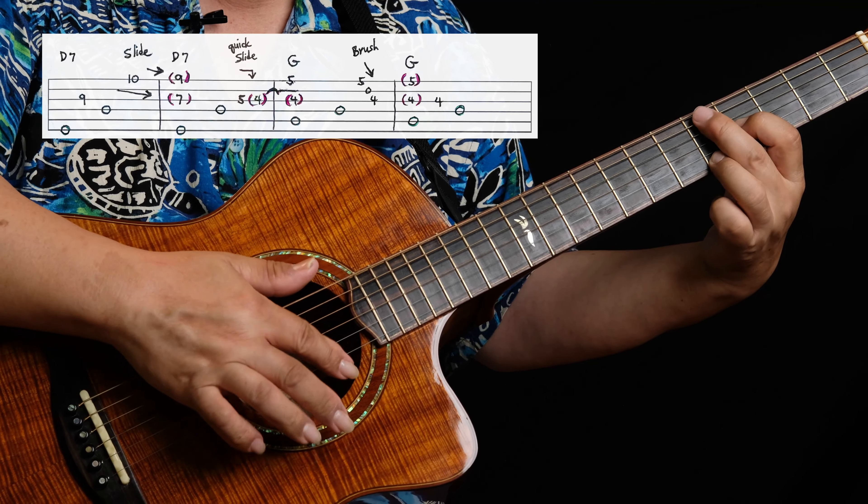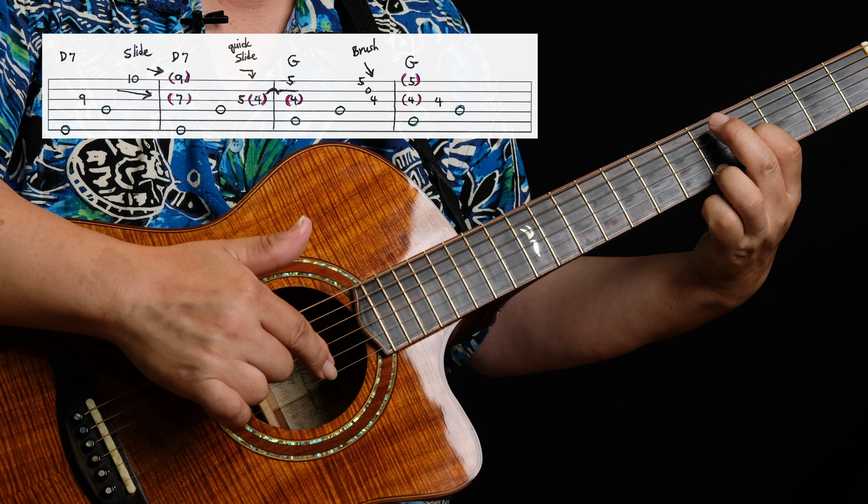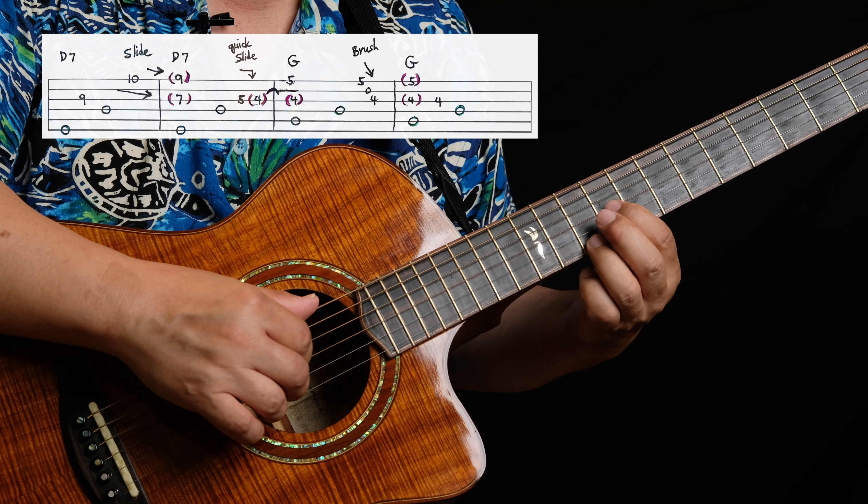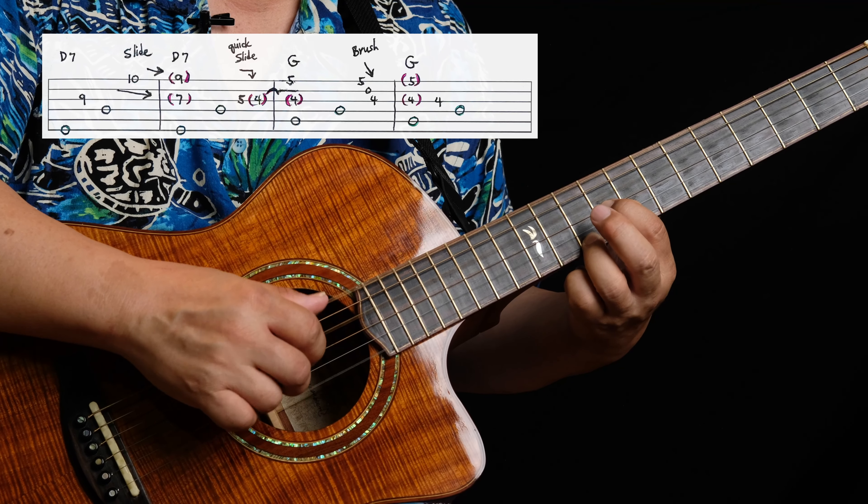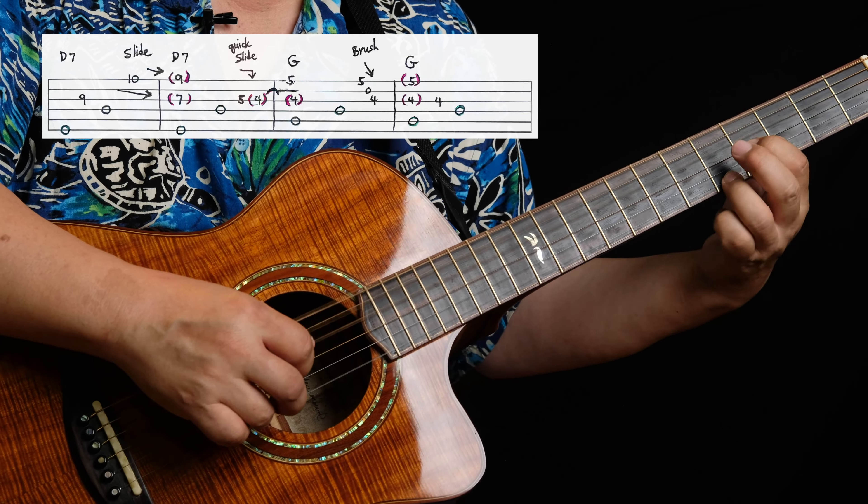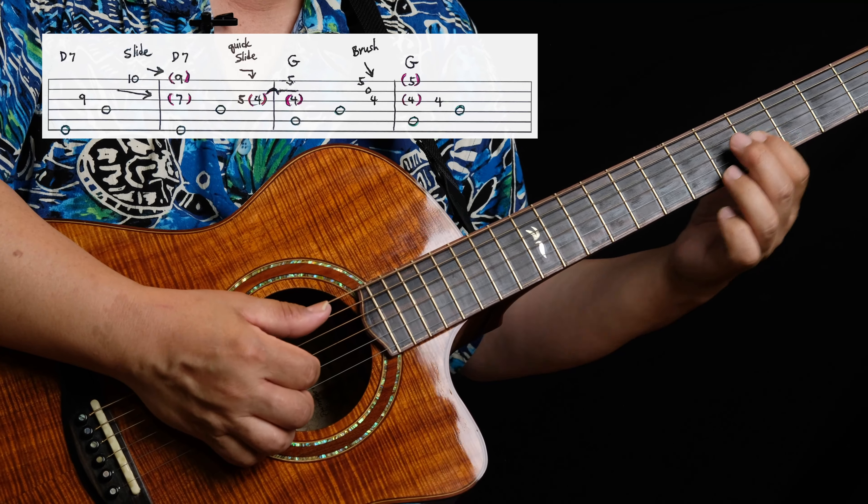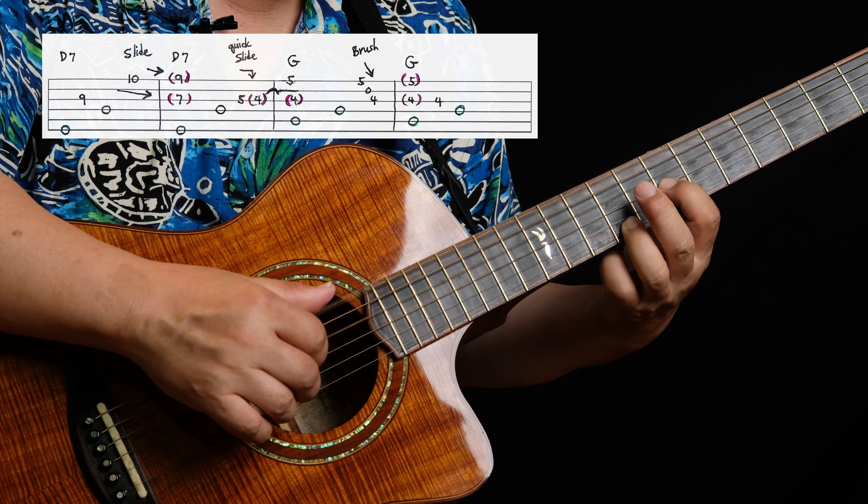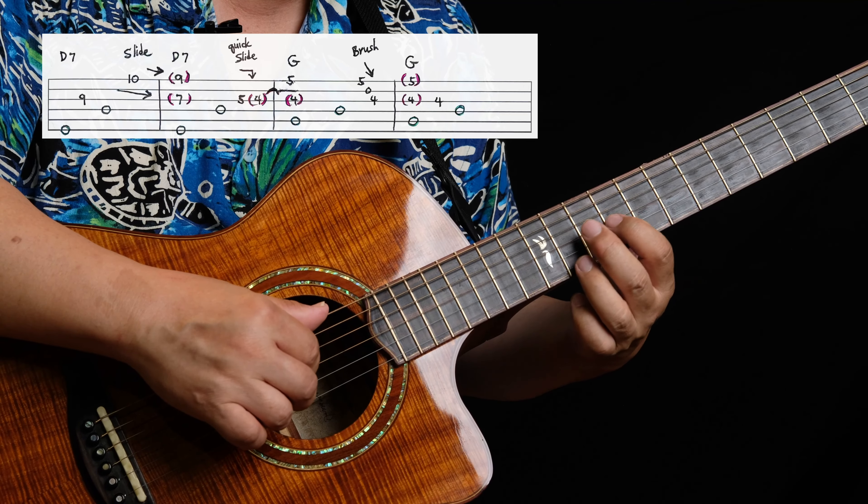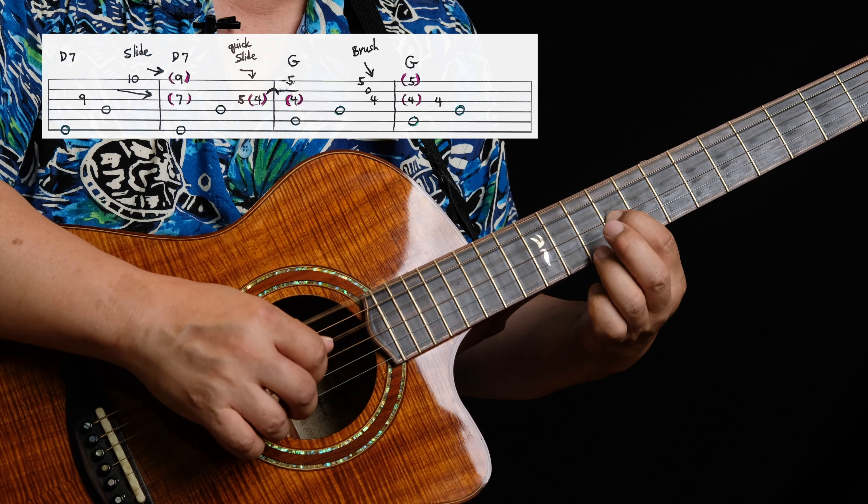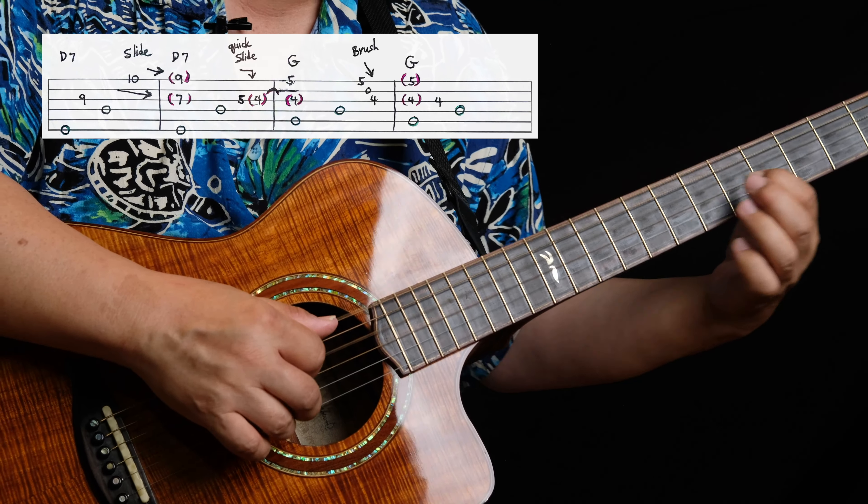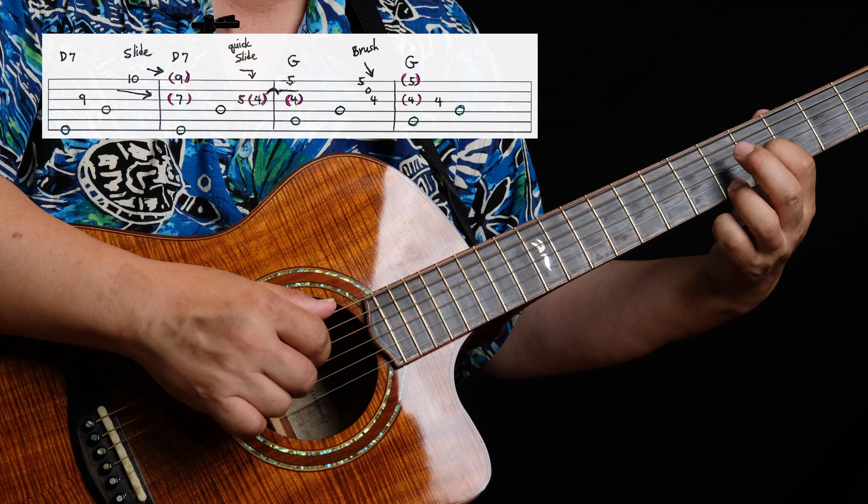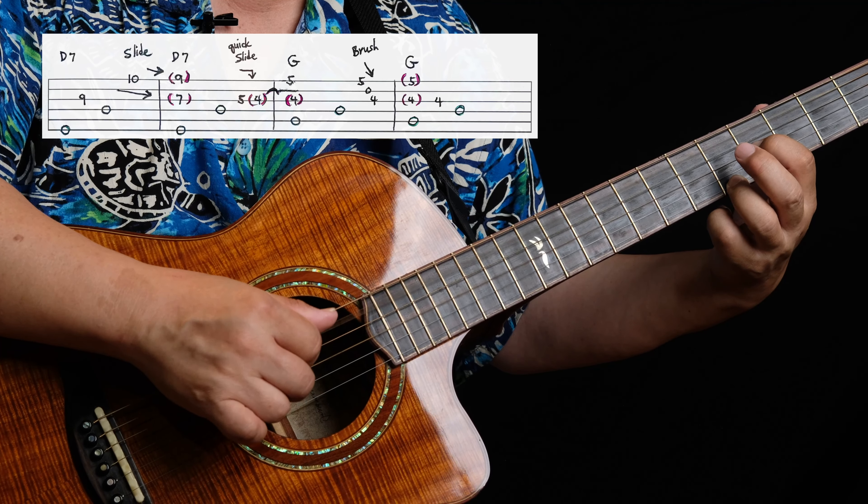And then this is called a brush. A brush is you take your pointer finger and you strum backwards. Let's see, I'll do it slow again like this. It's tricky because when you slide, when these two notes slide, I'm hitting the bass note. Notice the way I wrote it. Then you hit the bass. You got that slide. This four is still ringing. You hit that bass note and you do a brush. And these two notes are ringing at the very end when I play the last two.